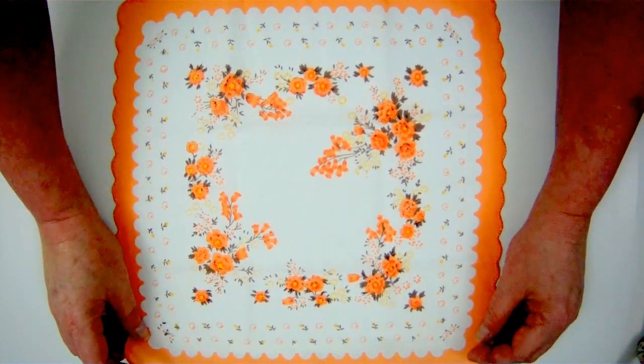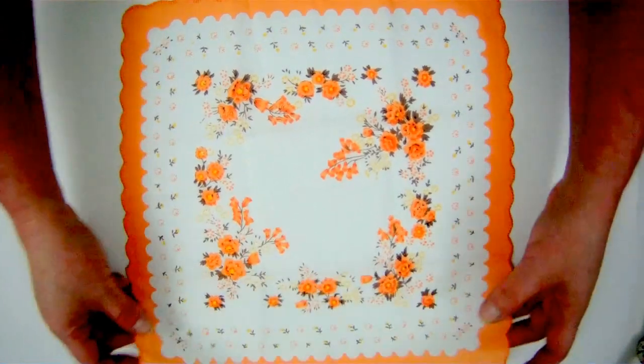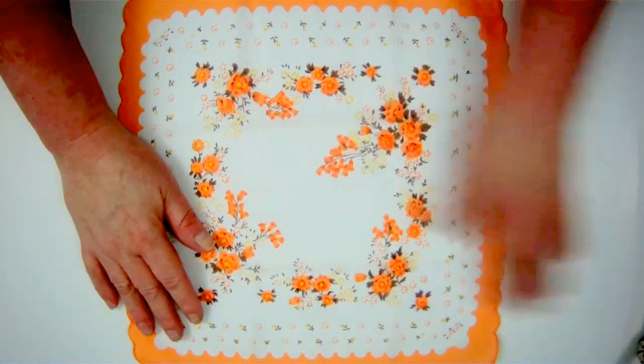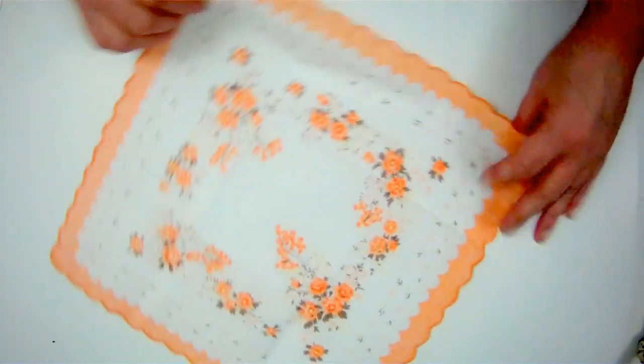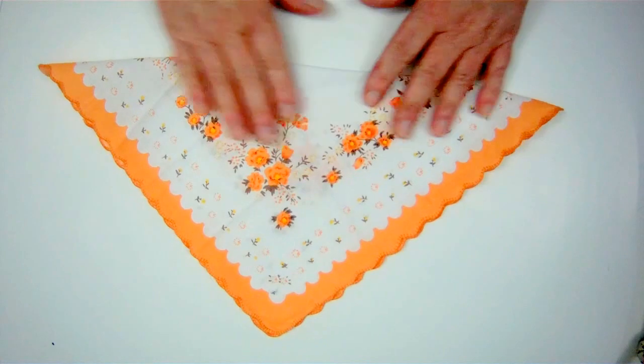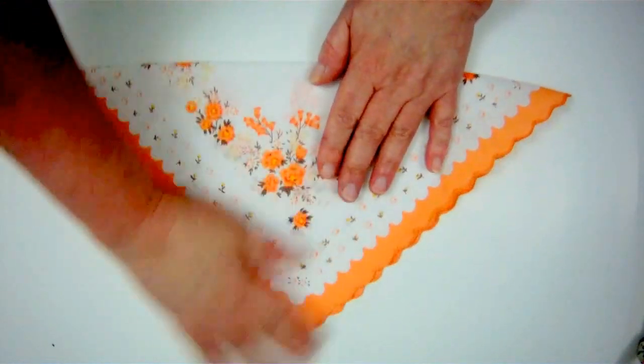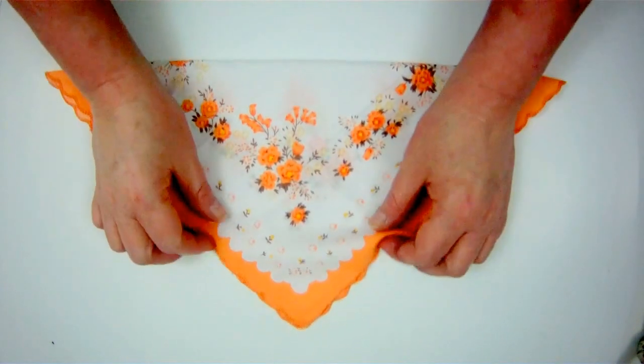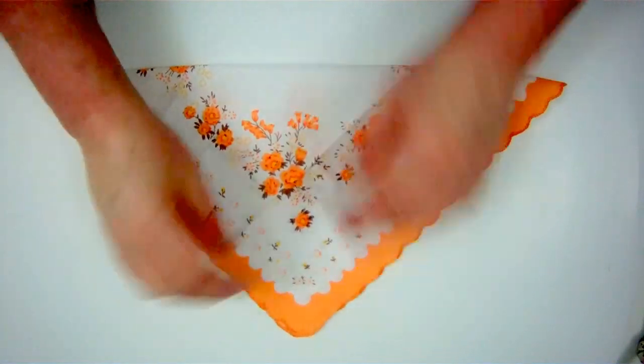Now for our bunny, you take your 12 inch square handkerchief or piece of material, turn it over and fold it crossway so it makes a triangle. It's important that it's lightweight, otherwise you're going to have a really hard time.